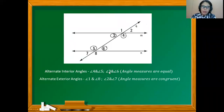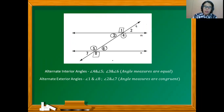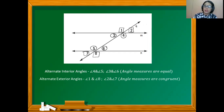We have alternate exterior angles 1 and 8, as well as 2 and 7. They are placed alternately from the transversal line, outside of the parallel lines — that is why they are called exterior angles. The bases are the parallel lines. The relationship between pairs of alternate exterior angles is that their angle measures are equal or congruent.